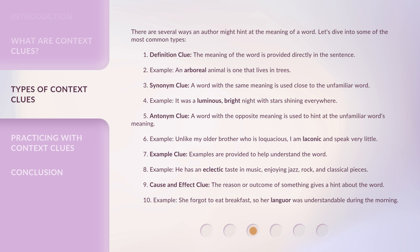Fourth, the Example Clue: examples are provided to help understand the word. For example, he has an eclectic taste in music, enjoying jazz, rock, and classical pieces. Fifth, the Cause and Effect Clue: the reason or outcome of something gives a hint about the word. For example, she forgot to eat breakfast, so her languor was understandable during the morning.